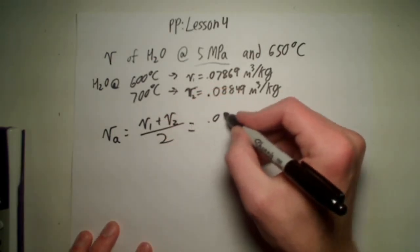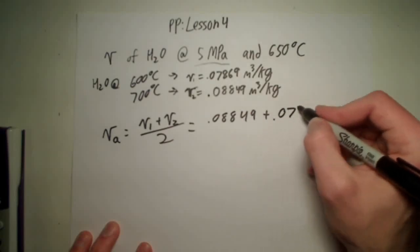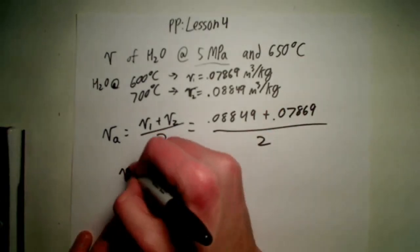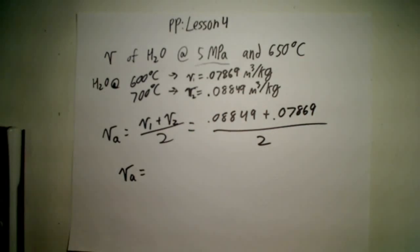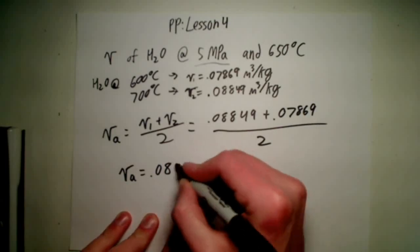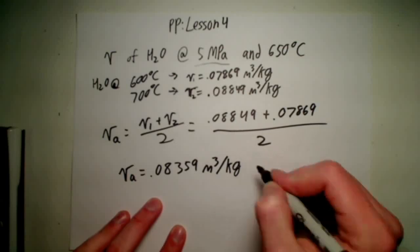So that equals 0.08849 plus 0.07869 all over 2. Let's plug this into my calculator. That equals 0.08359 meters cubed per kilogram.